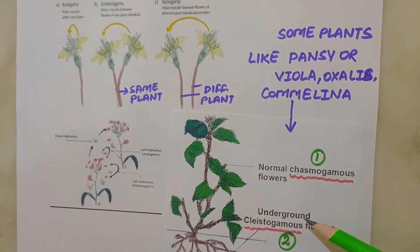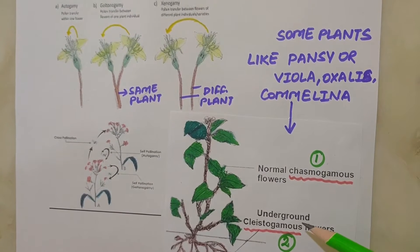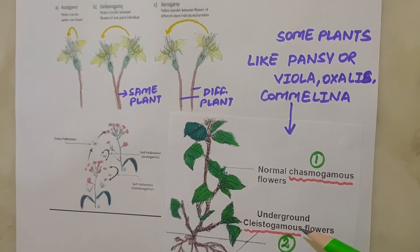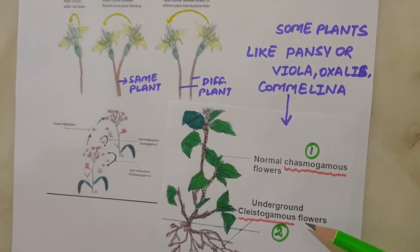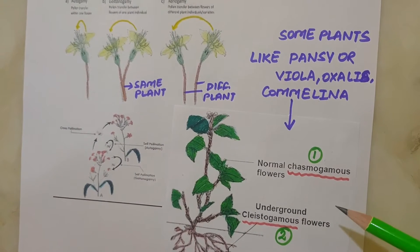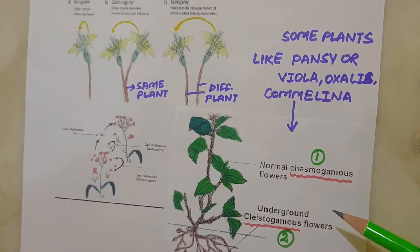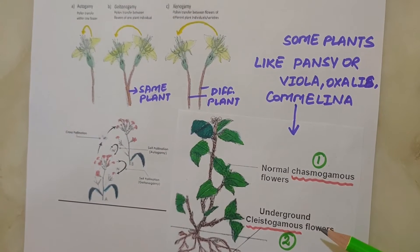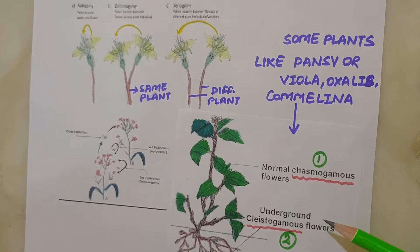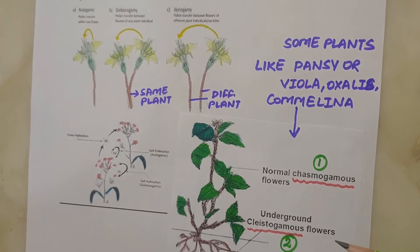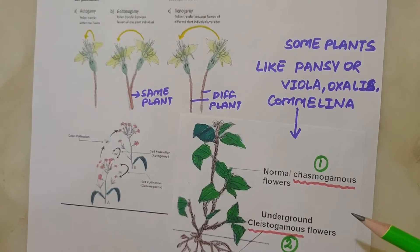Cleistogamous flowers produce assured seed set even in the absence of pollinators. The advantage of cleistogamy is that the plant can propagate itself under unfavorable conditions or even in the absence of pollinators. The disadvantage is that there is self-pollination, due to which chances of variation and evolution of genetically superior plants is reduced.